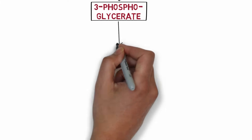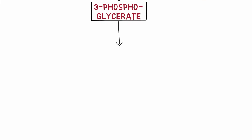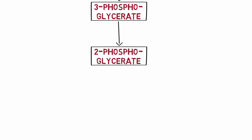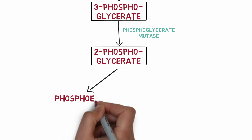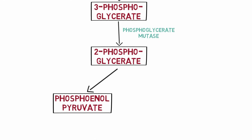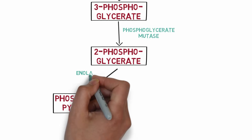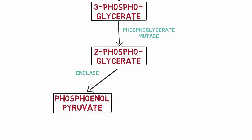Next, 3-phosphoglycerate is converted to 2-phosphoglycerate in a simple rearrangement reaction catalyzed by the enzyme phosphoglycerate mutase. Then, 2-phosphoglycerate is converted to phosphoenolpyruvate (PEP) by the enzyme enolase, with magnesium ions also required in this reaction.